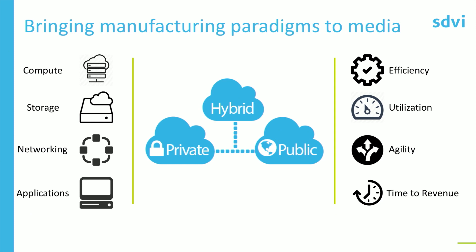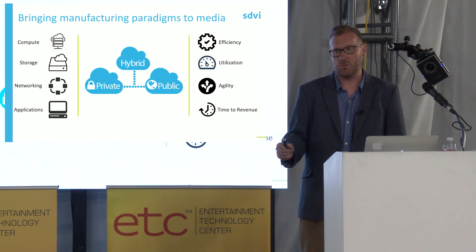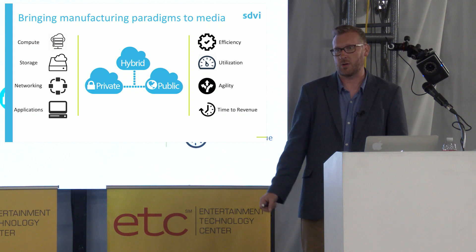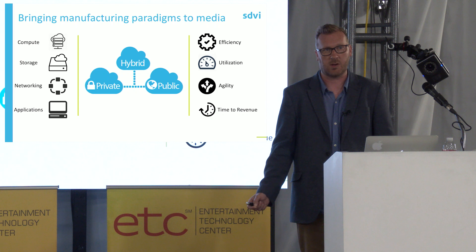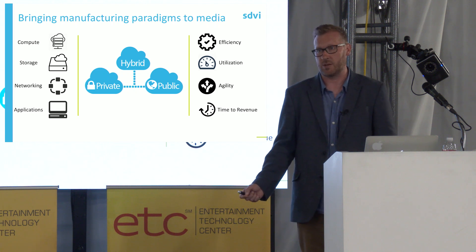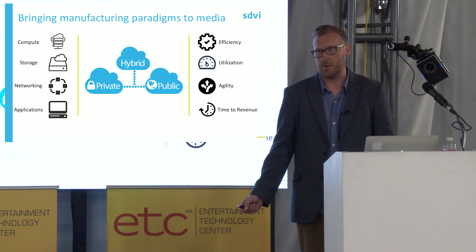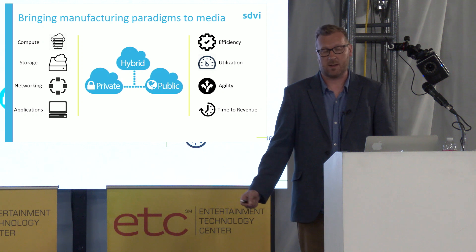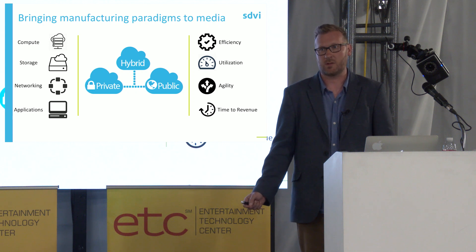What we're really doing is we're bringing manufacturing paradigms to the media industry. If you ignore the creative side of media production and you think of the distribution side of media production, it's essentially a factory. They're receiving raw materials into the factory, turning that into products, and then shipping those products out to various different distribution systems. What we do in that paradigm is we provision compute, storage, networking, and the specialized applications required for processing media — think transcoders, QC tools, or captioning products. We deploy them wherever you happen to need them, whether that's in a public cloud, private cloud, or some hybrid. The ultimate goal, as always with supply chain thinking, is to drive efficiency, maximize utilization, increase agility, and ultimately time to revenue — how quickly can you react to market needs to get your product out there?